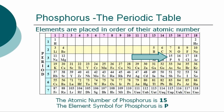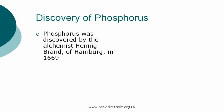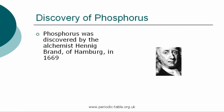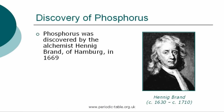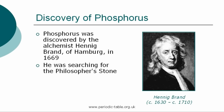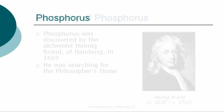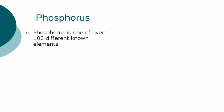The element Phosphorus was discovered by the alchemist Hennig Brand of Hamburg in 1669 while searching for the Philosopher's Stone. It was prepared from urine and was the first element to be chemically discovered. Owing to its peculiar properties and the secrecy which was maintained about its preparation, it remained a very rare and costly substance until the manufacture of matches brought about its large-scale production.